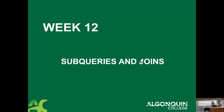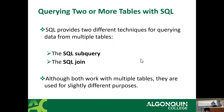Today we're talking about subqueries and joins. When you want to pull data from more than one table at the same time, you have to connect the tables and you have two ways of doing it: the subquery and the join. They both work with multiple tables, but they're definitely used for different purposes.